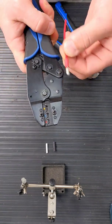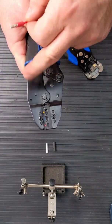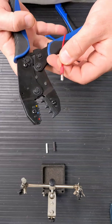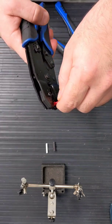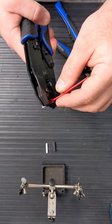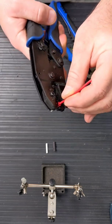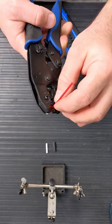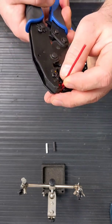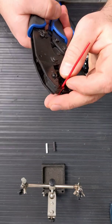You want to get your crimper and use the corresponding color. Red would be for the red connector. Place it in there and tighten it slightly, but don't crimp it. This way you can push on it to ensure that the wire is fully within the connector, and then crimp.